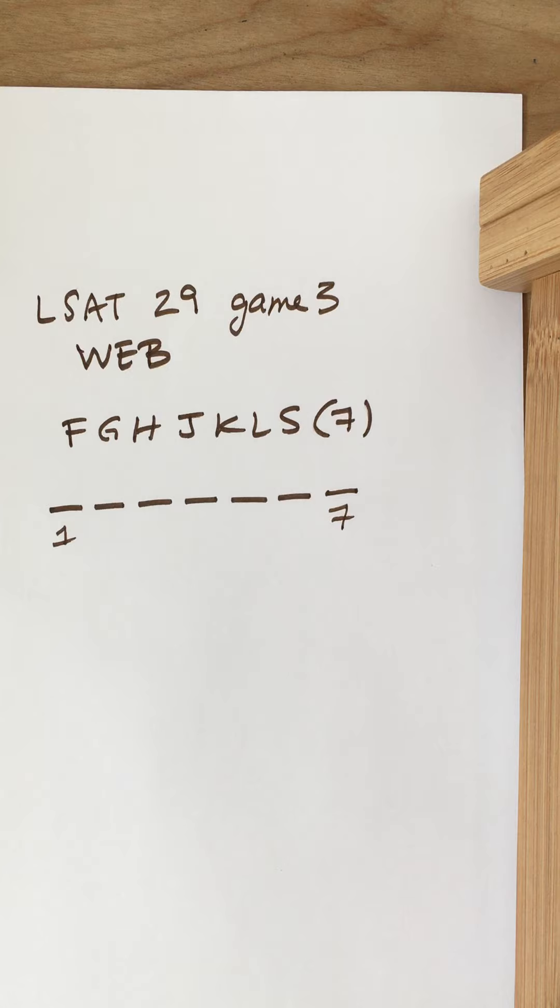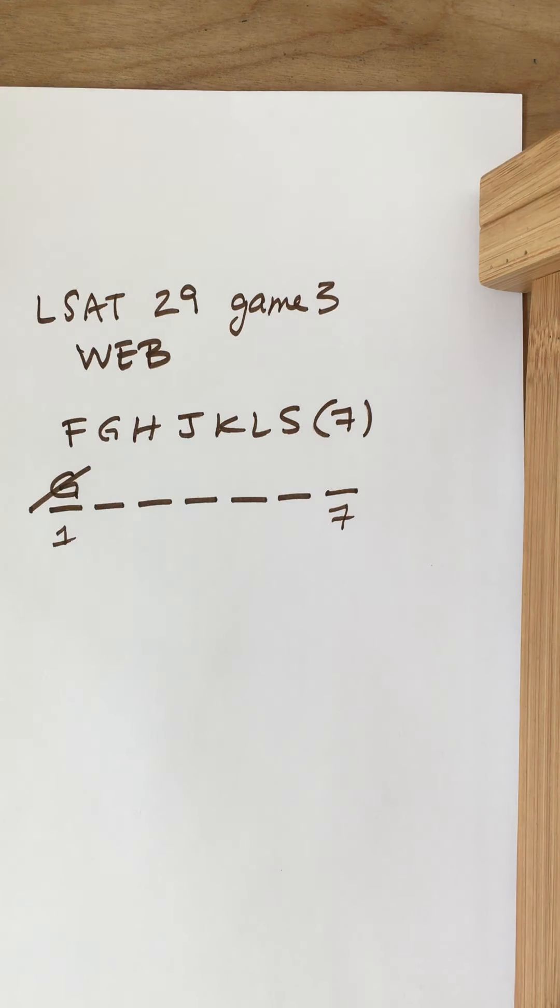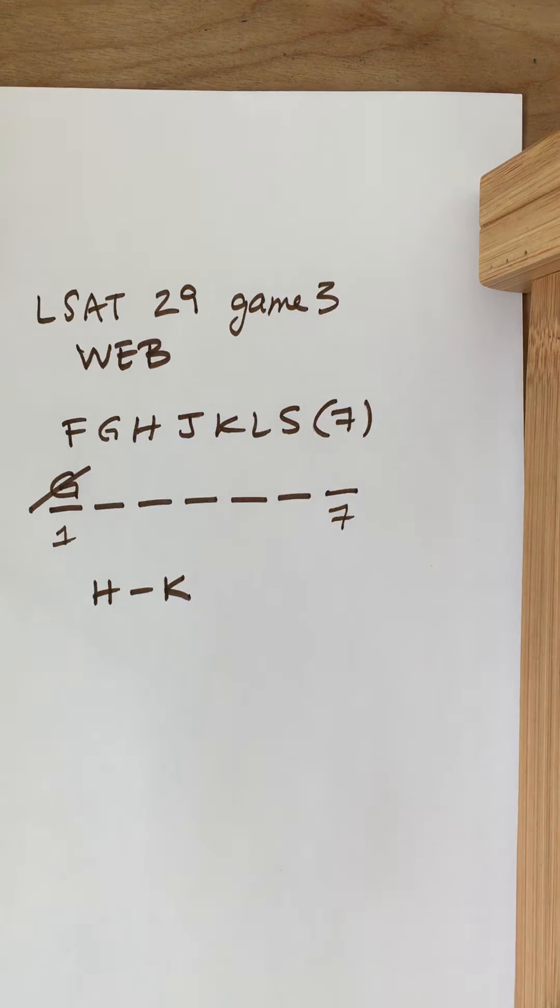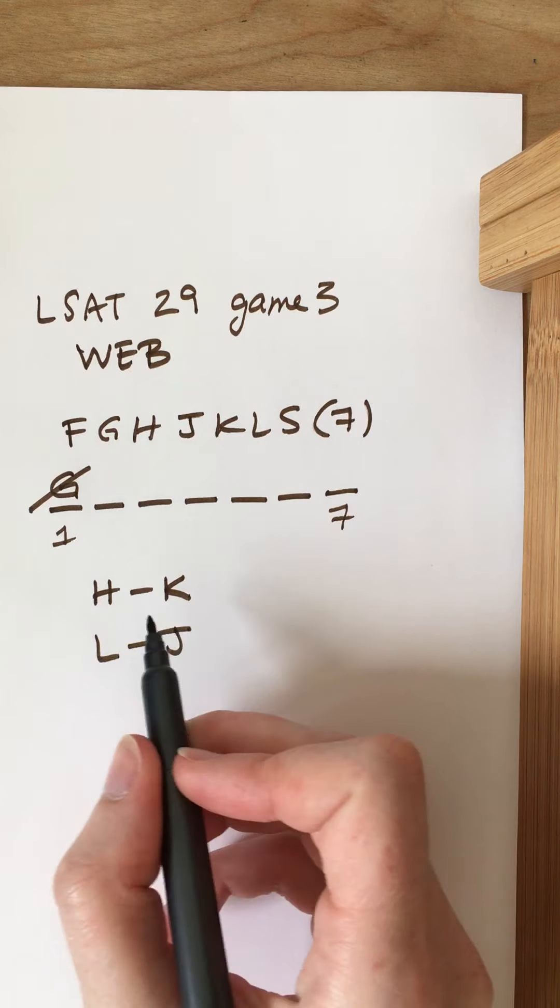G isn't first, so that's one way to represent that. H is sometime before K. L is sometime before J. So far we haven't been able to connect these guys.